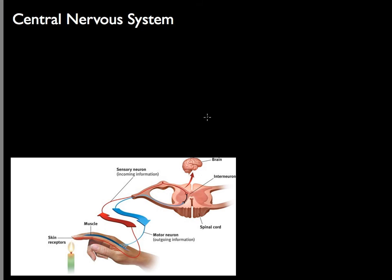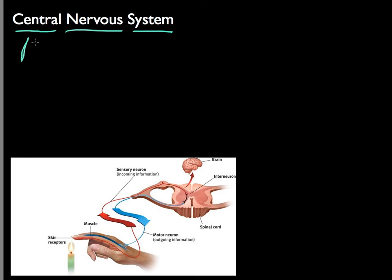All right, so we have finished up with the peripheral nervous system — we looked at somatic and autonomic and broke them down further. In the central nervous system, we're now looking at basically the brain and the spinal cord. And probably one of the key concepts to understand is something we refer to as a reflex arc.